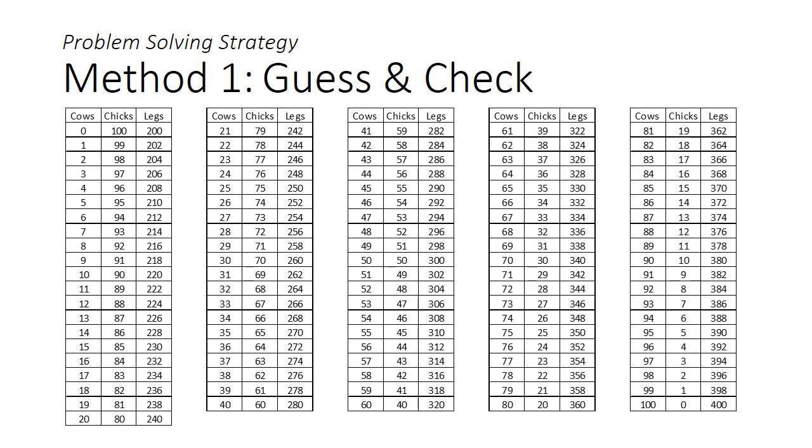There are seven ways to tackle this problem. The classic primary school method is to guess and check. You begin by constructing a table listing the number of cows and chickens, such that they add up to 100.